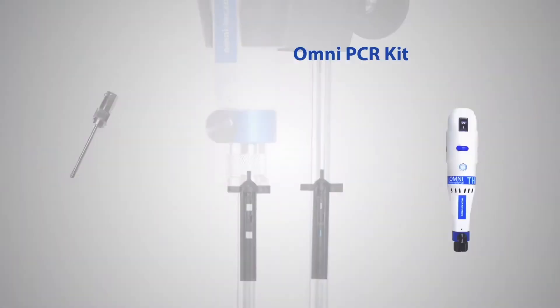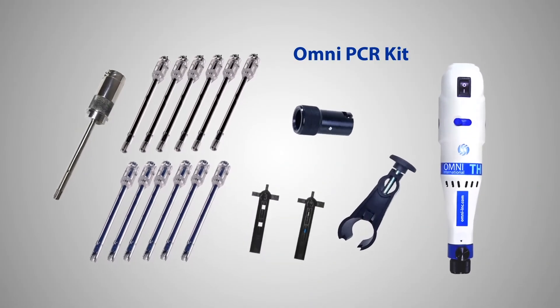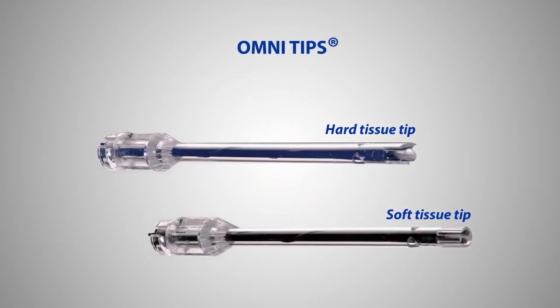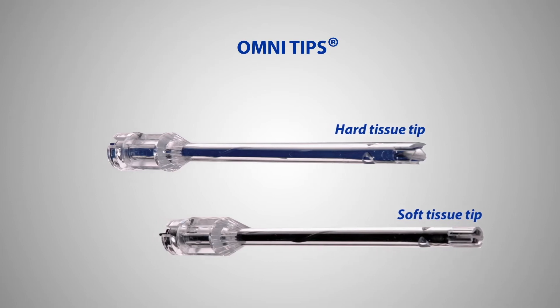The Omni PCR kit with disposable generator probes is ideal for PCR and extracting nucleic acids. Omni tip generator probes are disposable and completely eliminate the risk of cross-contamination.